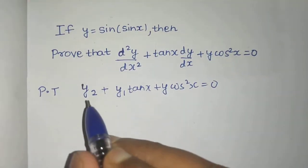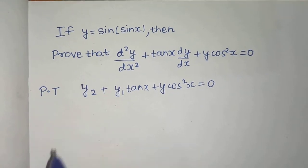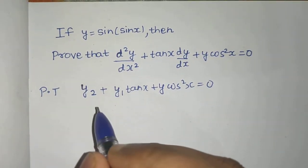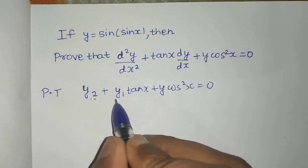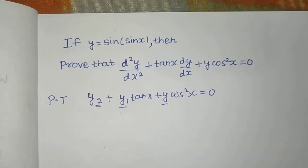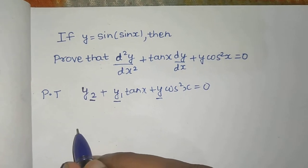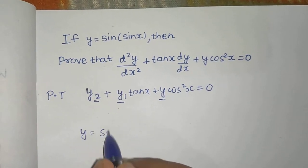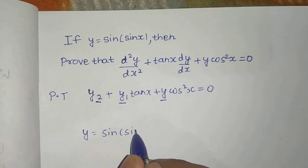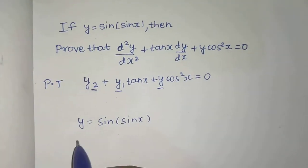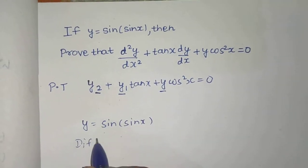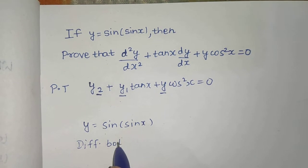So we need to prove this thing. Now here you can see we have y2, we have y1, we have y. So first of all you have y. First write this: y equals to sine of sine x. Now differentiate both sides with respect to x.